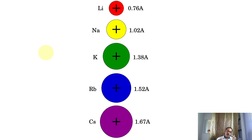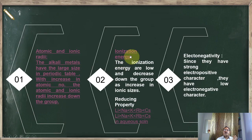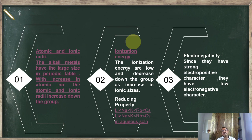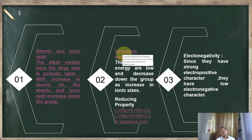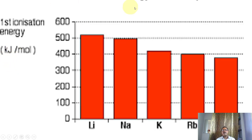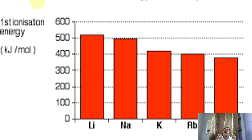Ionization energy is the energy required to remove the outermost electron from an atom. The amount of heat energy required to remove the outermost electron from a gaseous element is called ionization potential or ionization energy. The ionization energy of lithium is greater than sodium, which is greater than potassium, rubidium, and cesium. Cesium possesses the least ionization energy, and hence when sunlight falls on cesium it readily ejects electrons.